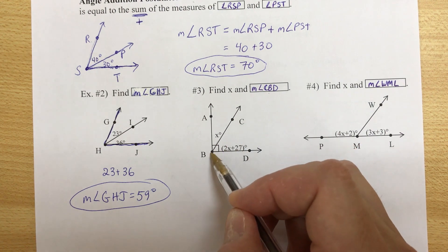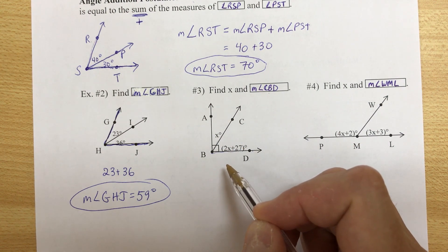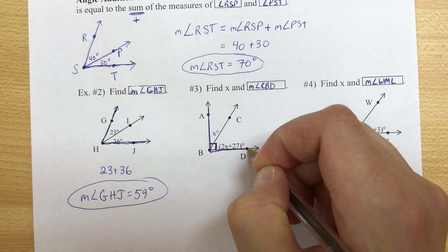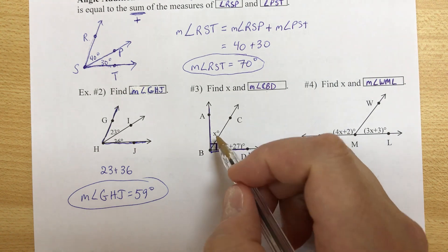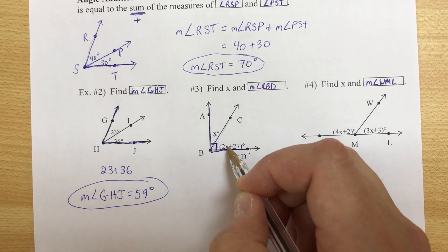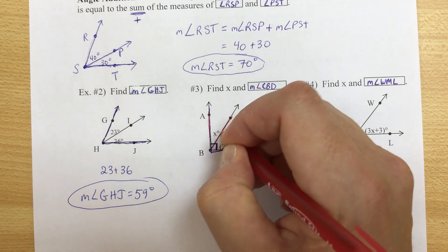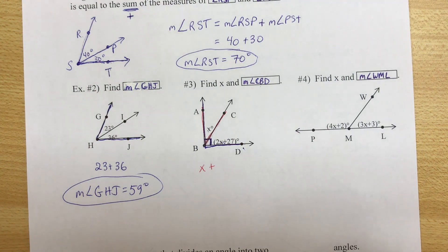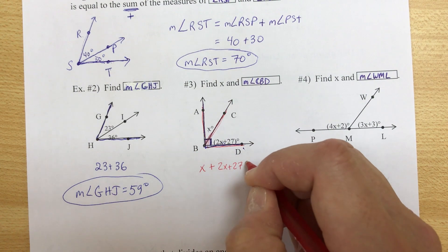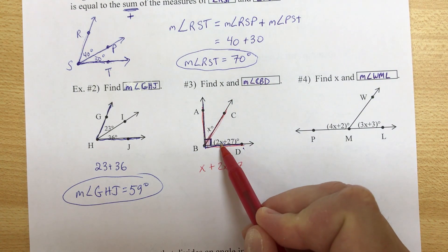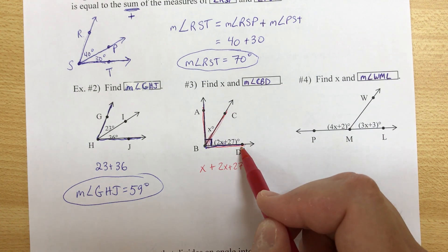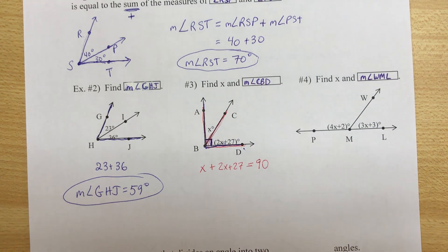So we want the measure of angle CBD and we want X. Now one thing that should jump out at you is that we have a right angle. Angle ABD is equal to 90 and that's the big angle. Well if we add the parts, the two small ones, that should give us the whole thing. So we're going to make an equation here.